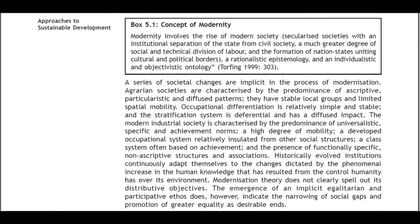Agrarian societies are characterized by the predominance of descriptive, particularistic, and diffuse norms, stable local groups, and limited spatial mobility. Occupational differentiation is relatively simple and stable, and the stratification system has a diffuse impact. The modern industrial society, by contrast, is characterized by universalistic, achievement-based norms, high mobility, a developed occupational system relatively insulated from other social structures, a class system often based on achievement, and functionally specific non-ascriptive associations.